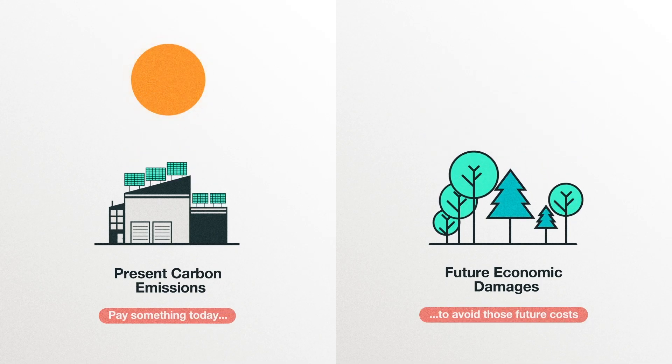But what exactly should this number be? How have policymakers in the United States approached this question so far? In the last year of the Bush administration, different agencies started taking various approaches to estimating the value to society of reducing carbon dioxide emissions by a ton.